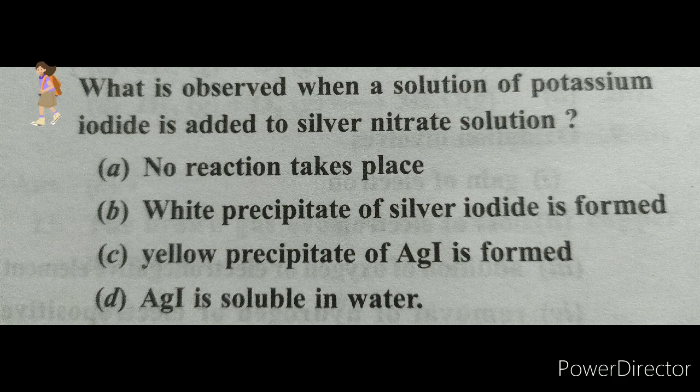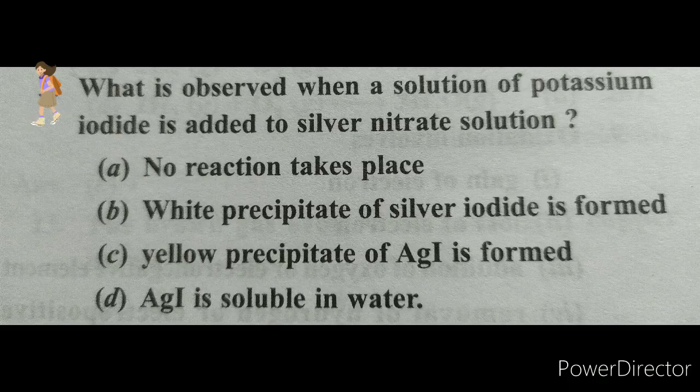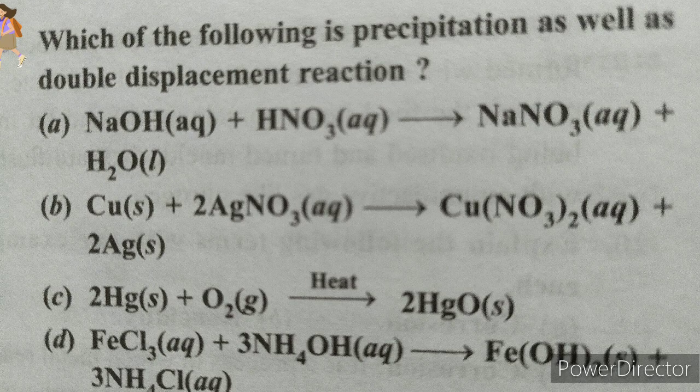Option C is correct. That is, yellow precipitate of silver iodide is formed, and this yellow precipitate is also insoluble in water.